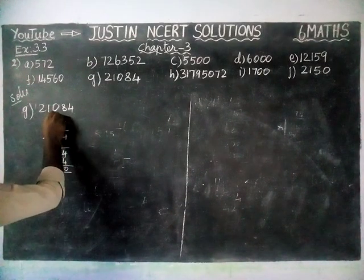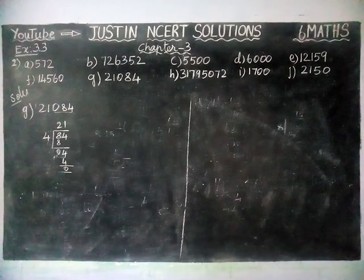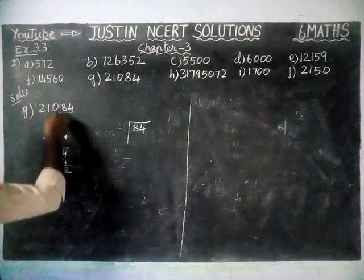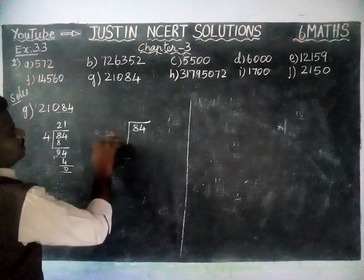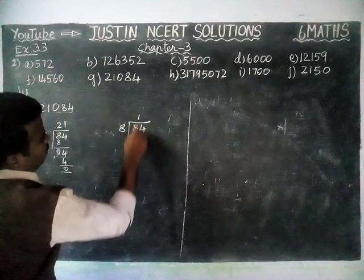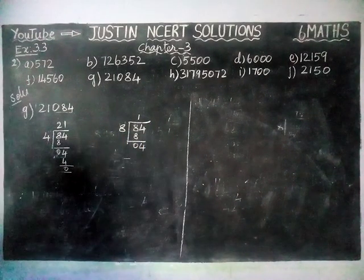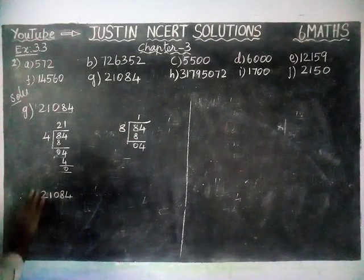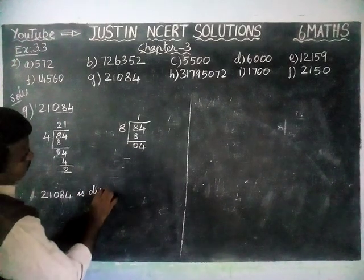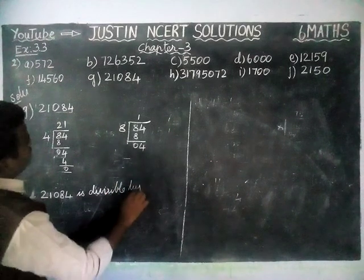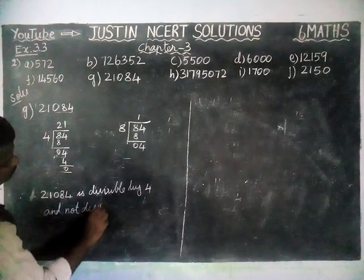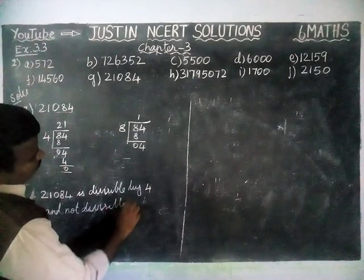Next, we check the last 3 digits for divisibility by 8. The last 3 digits give us 084, so we take 84. Dividing 84 by 8: 1 eight is 8, remaining 0, bringing down 4. We cannot divide 4 by 8. Therefore 21,084 is divisible by 4 but not divisible by 8.